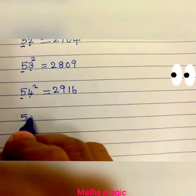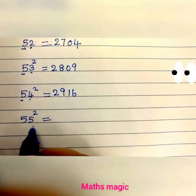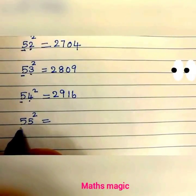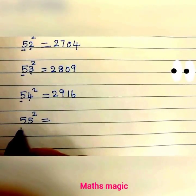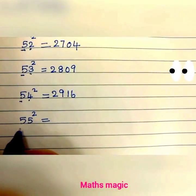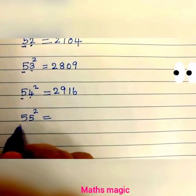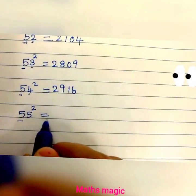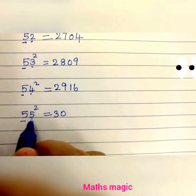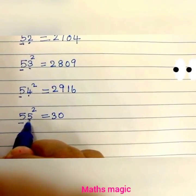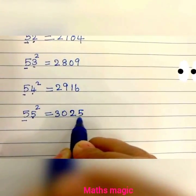55 squared can be done in two methods. Using the first method: 5 squared is 25, plus 5 is 30. The square of 5 is 25, written as 2 digits. So 55 squared is 3025.